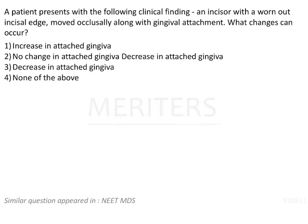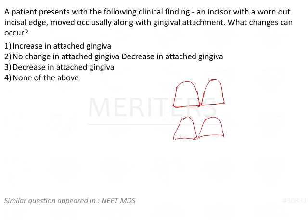A patient presents with the following clinical finding: an incisor with a worn-out incisal edge, moved occlusally along with the gingival attachment. What changes can occur? Let's understand this. You have a central incisor — this is how it normally looks. An incisor with a worn-out incisal edge means the clinical length of the crown has decreased. That is the first thing to remember.